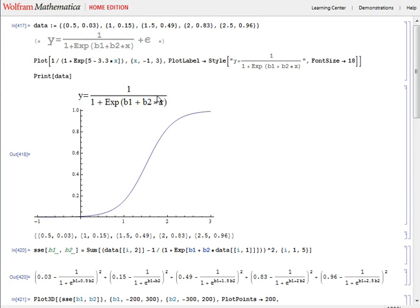All right, what we're looking at is a simple non-linear model. It's a logistic model with two functions, beta1 and beta2.